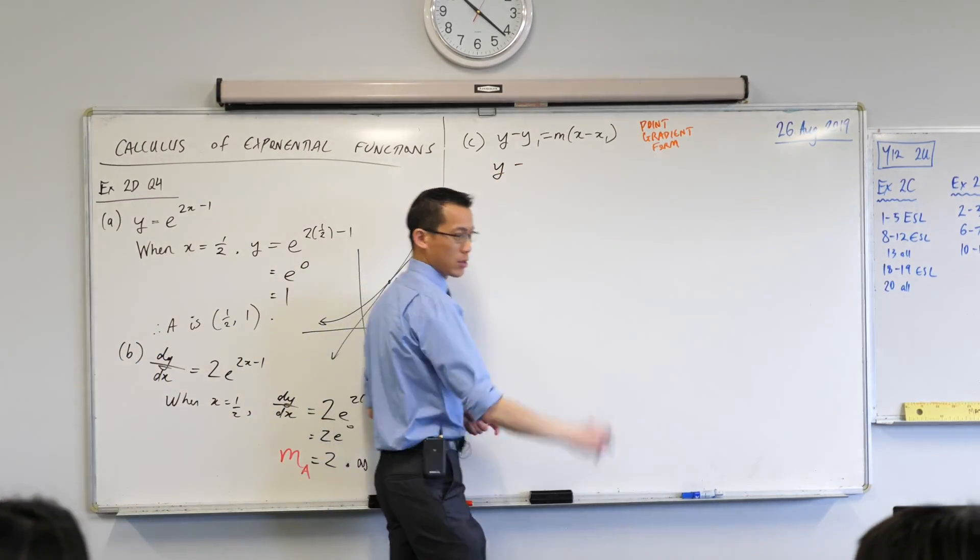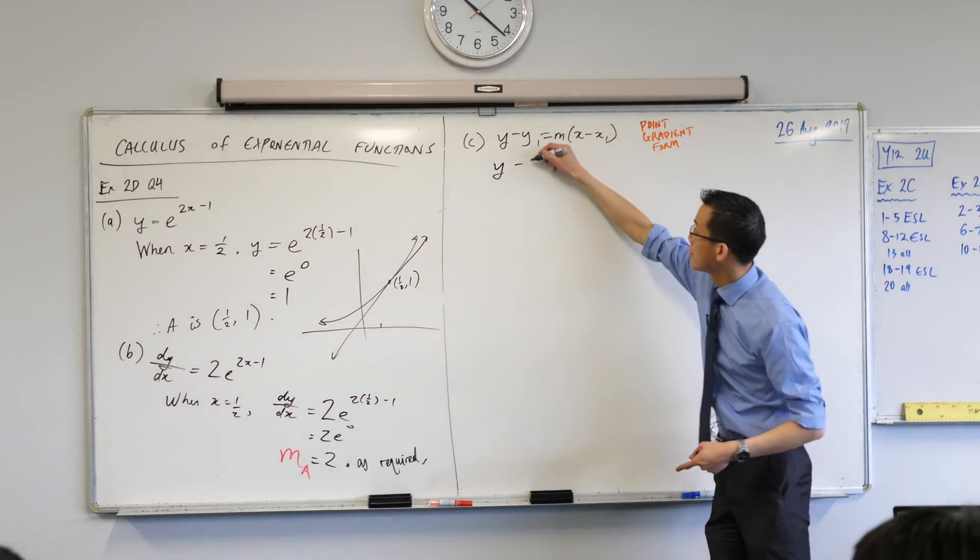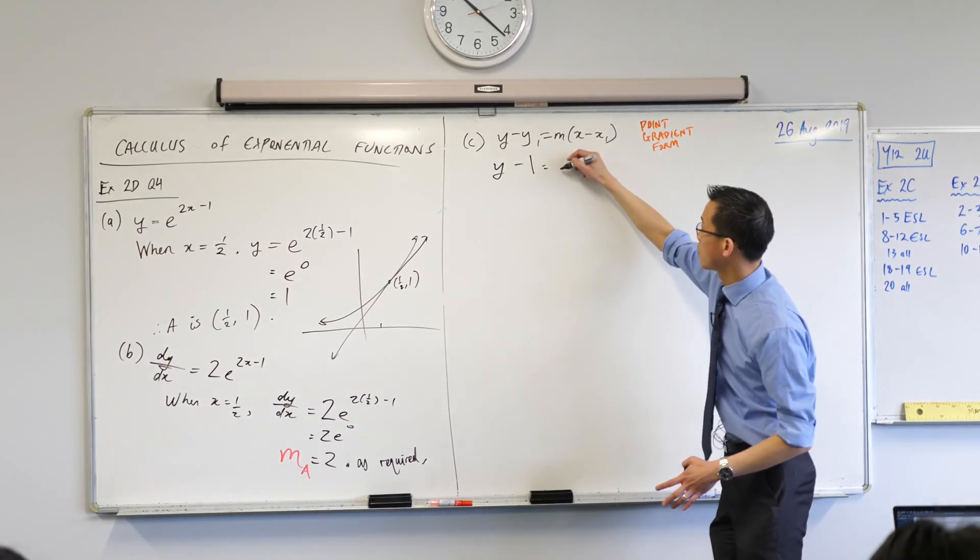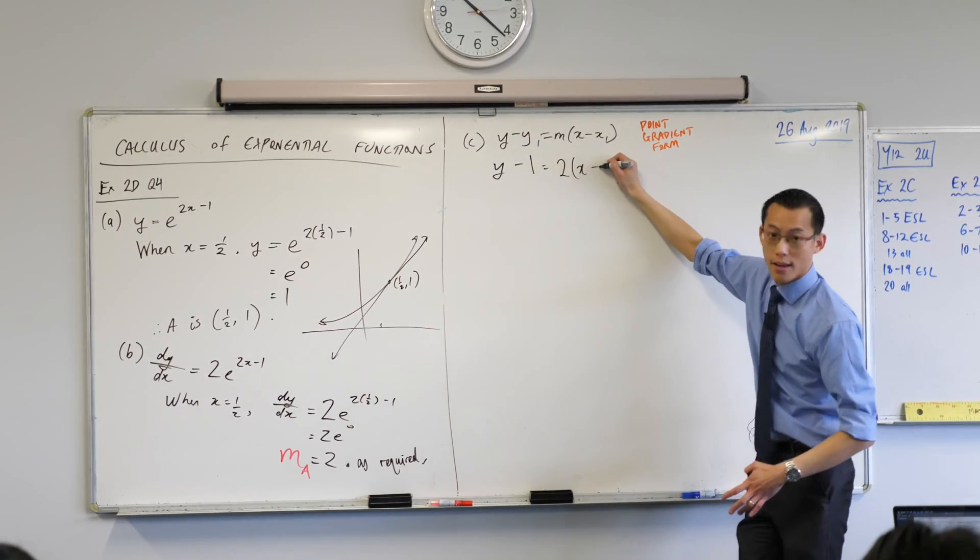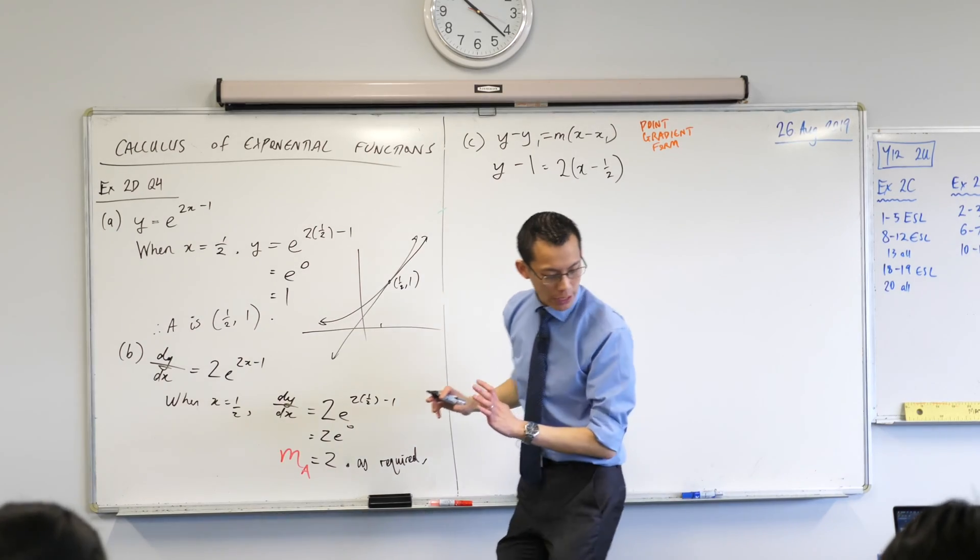So Y minus, what is Y1? It's 1. That's what I got from part A. Okay, the M is now what I got in the previous part, part B, so I'll put in 2. X minus 1/2. Okay, there we go. I've done all the substitution. Just have a quick look at the question.